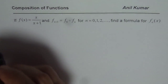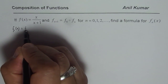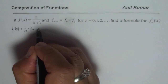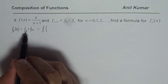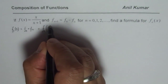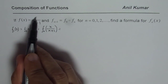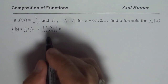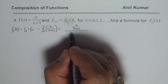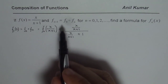Basically, the first function obtained by composition can be written as f₁ of x equals f of f of x — that is, function of function itself. So f₀, the initial function given to us, is x over x plus 1. Now, for the composition, we replace x with that part. So in the numerator I get x over x plus 1, and in the denominator I replace x with x over x plus 1, then add 1. That is the first composition of the function by itself.